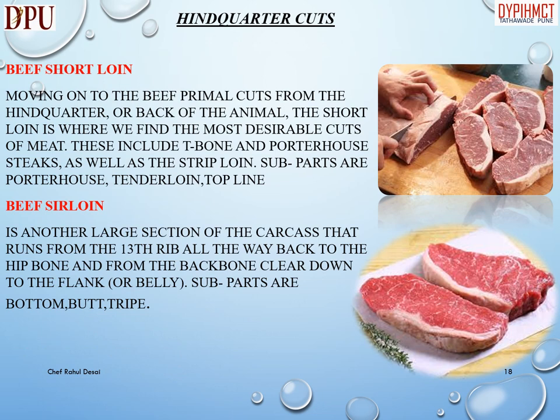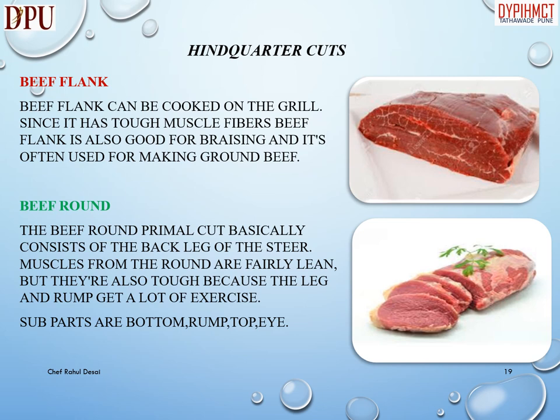Hind quarter of beef: moving on to the primal cuts from the hind quarter or back of the animal, the short loin is where we find the most desirable cuts of meat. These include T-bone and porterhouse steaks, as well as the strip loin. Sub-parts are: porterhouse, tenderloin, and top loin. Beef sirloin is another large section of the carcass running from the thirteenth rib all the way back to the hip bone and from the backbone down to the flank or belly. Sub-parts include bottom, butt, and tripe.